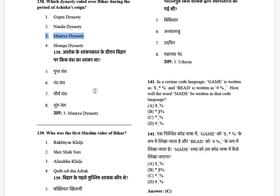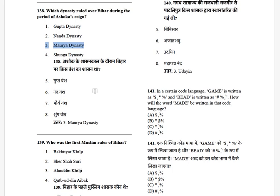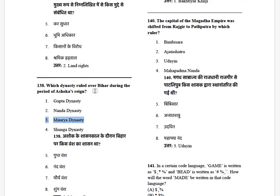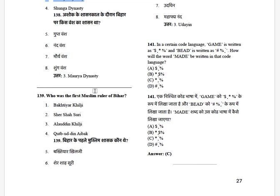Who was the first Muslim ruler of Bihar? The options are: Bakhtiyar Khilji, Sher Shah Suri, Alauddin Khilji, and Qutb ud-Din Aibak. The answer is Bakhtiyar Khilji.